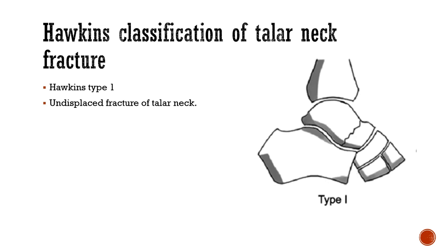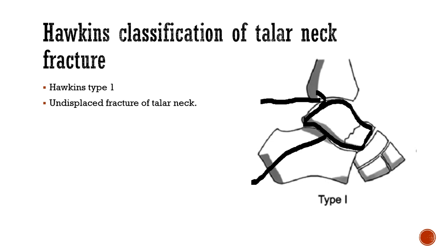The Hawkins classification is based on the displacement of the fracture and the displacement of the subtalar, tibiotalar, or talonavicular joints. The tibiotalar joint is between tibia and talus; the subtalar joint is the talocalcaneal joint below the talus; and the talonavicular joint is between the talus and navicular bone.